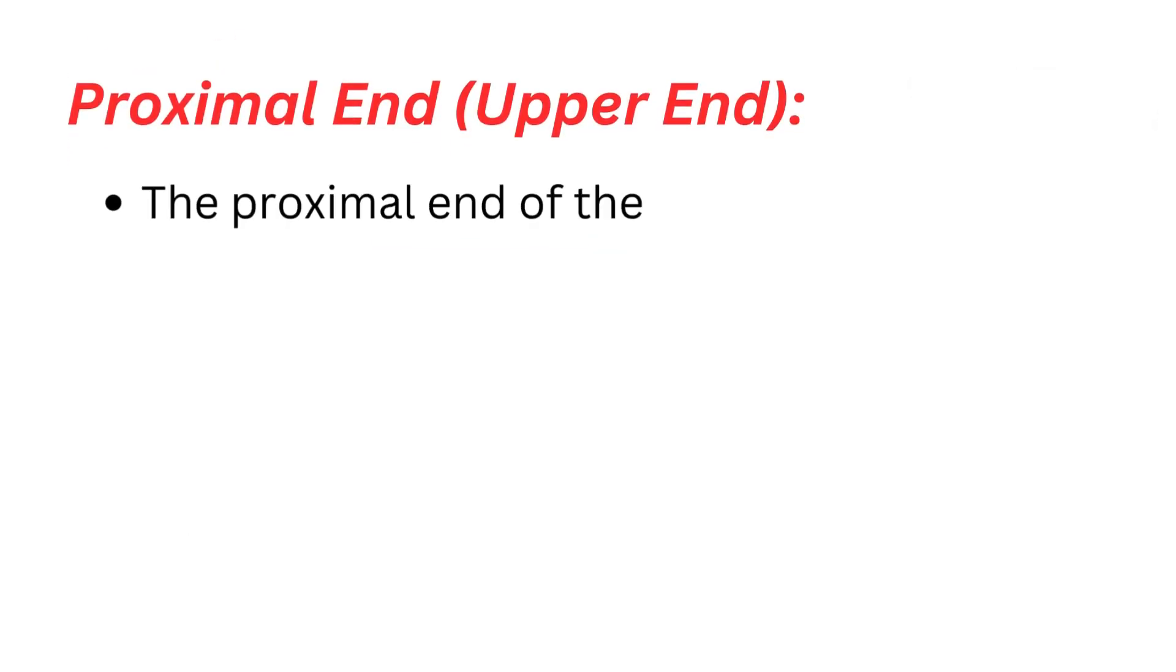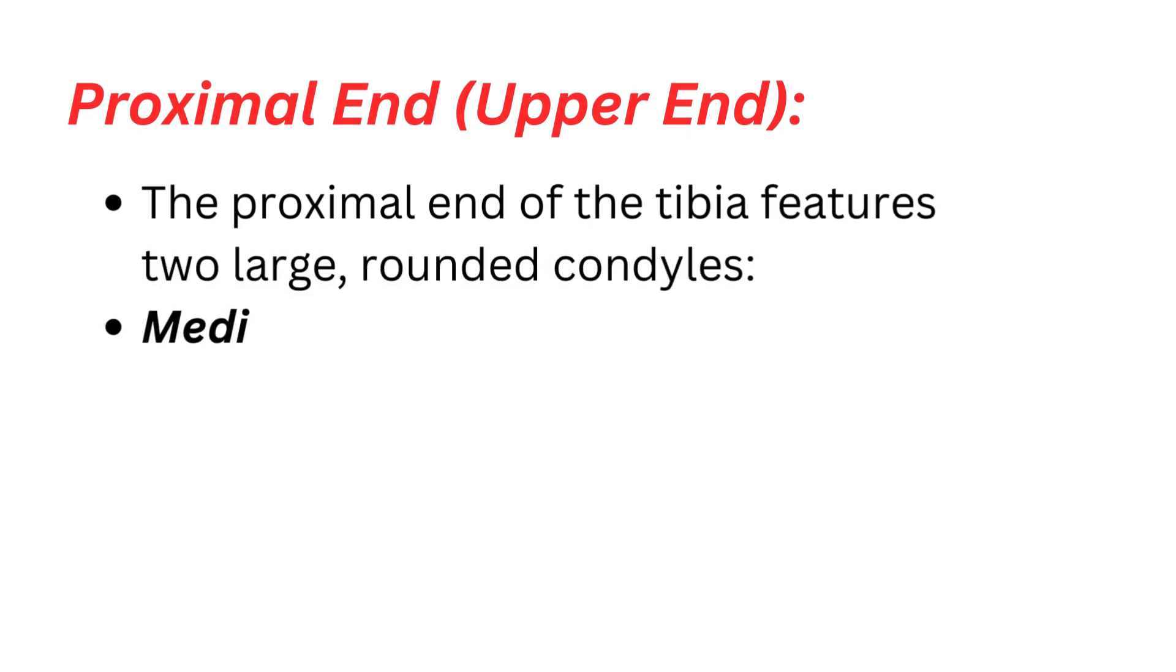Proximal end, upper end: The proximal end of the tibia features two large, rounded condyles. The medial condyle is located on the inner side, while the lateral condyle is located on the outer side.